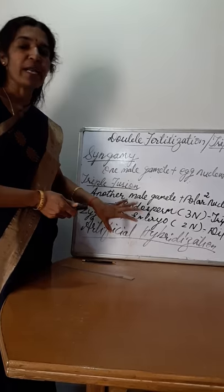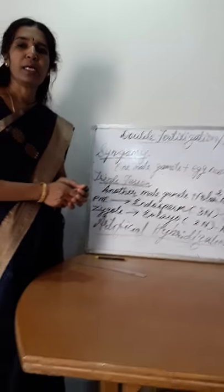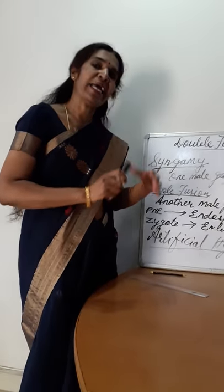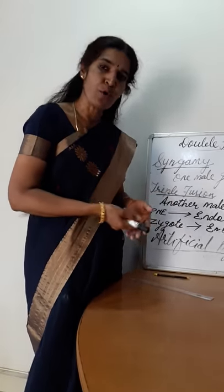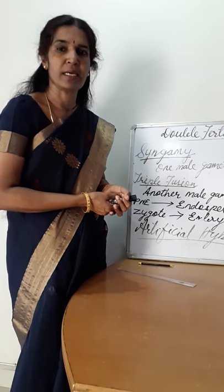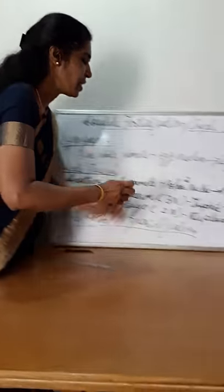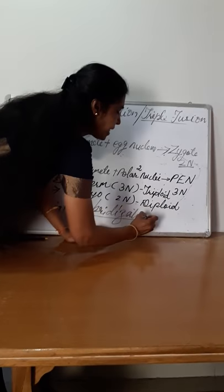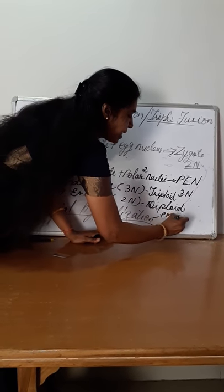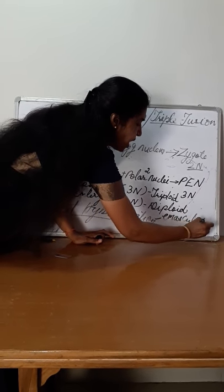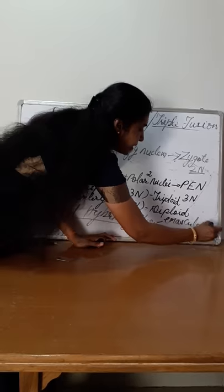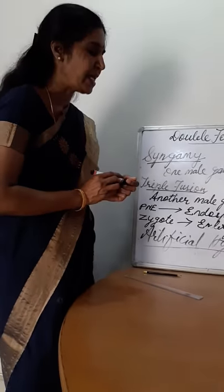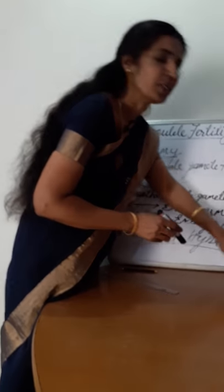For a bisexual flower, the anther is removed before it matures. That process is known as emasculation — the removal of anther from a bisexual flower before it matures. That process is known as emasculation.